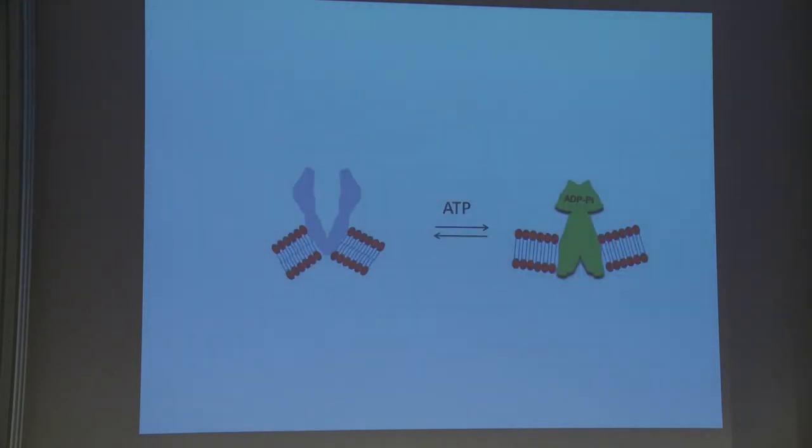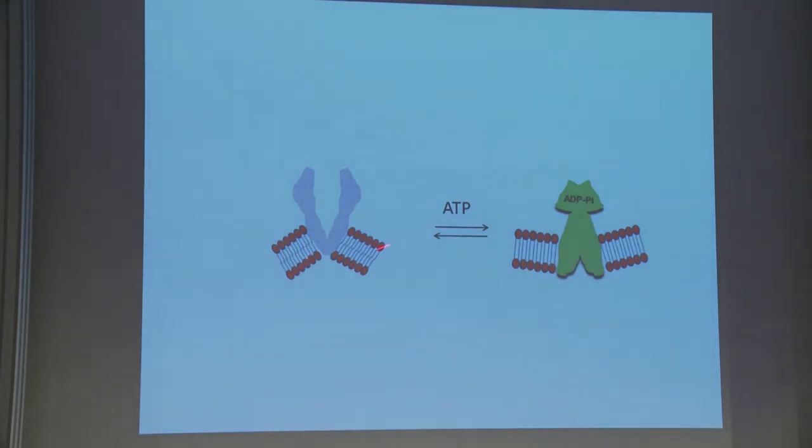Now let's take an example of ABC transporter dynamics where in presence of ATP you can see when it's open, there is one curvature. When it's closed, you have another curvature. The sign of the membrane curvature is changing upon ATP cycling.